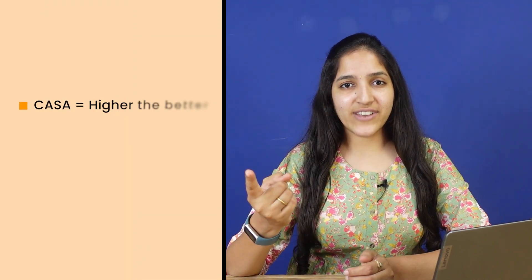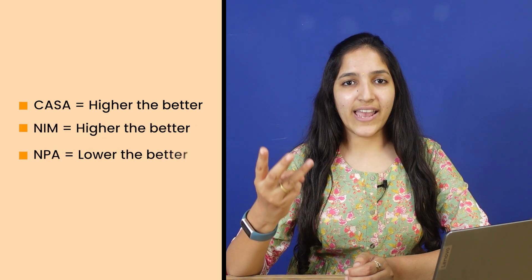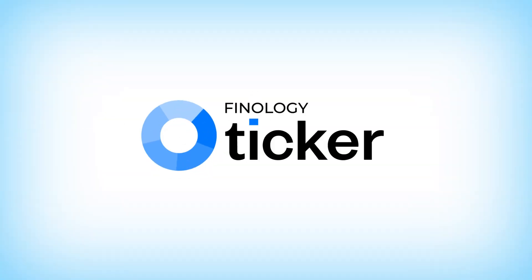You can find all the banking ratios on Ticker and compare them with other stocks with ease. So to summarize, we discussed three important banking ratios: CASA, Net Interest Margin, and NPA ratio. CASA is generally higher the better; Net Interest Margin is also higher the better; NPA ratio is lower the better for any banking stock. Remember to analyze these ratios alongside other financial data available on Ticker — it will help you make more informed decisions about which banks to invest in.